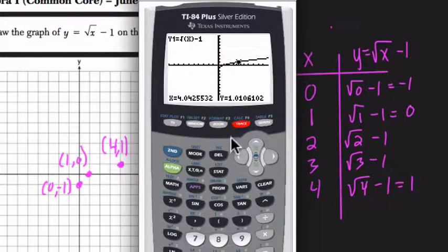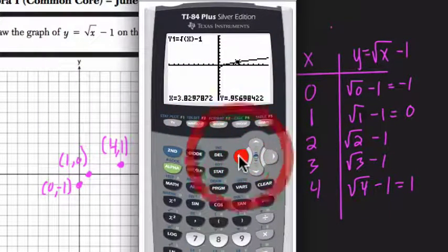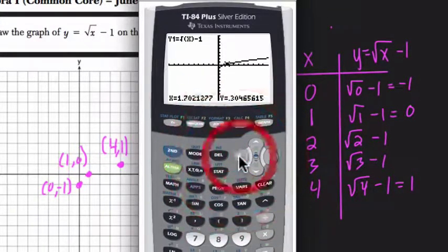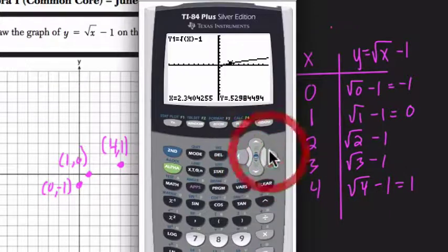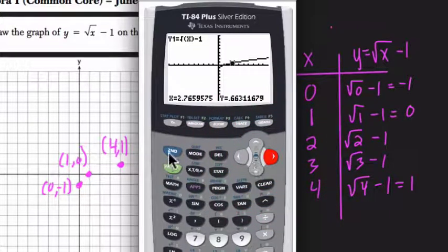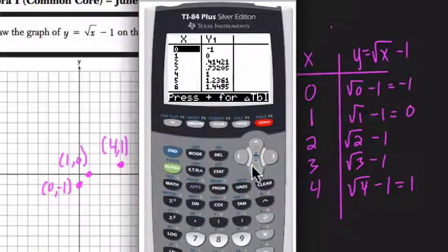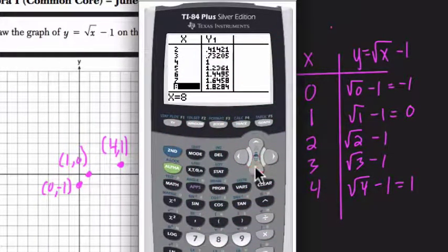Another nice thing is the trace button. The trace button just kind of allows you to scroll along the shape of the graph and it tells you the different x's and y values and you want to pick ones that are easy to plot. A nicer feature, in my opinion, is if you hit second graph, you get a table.